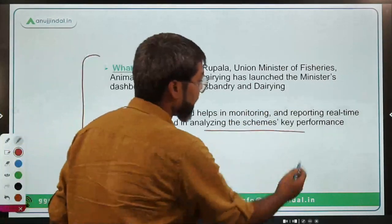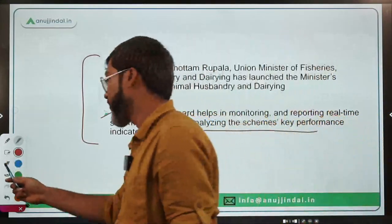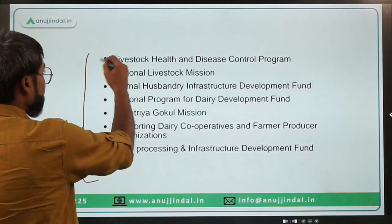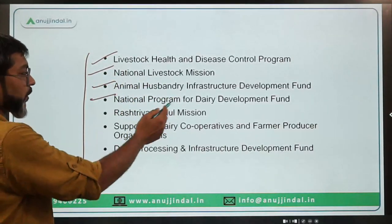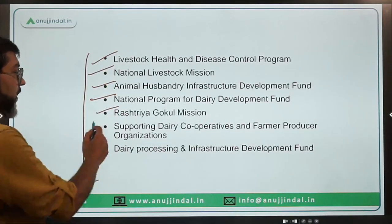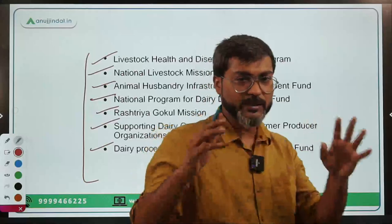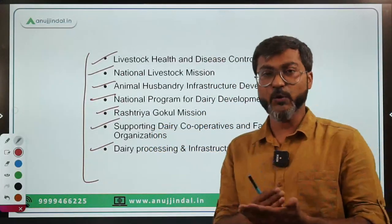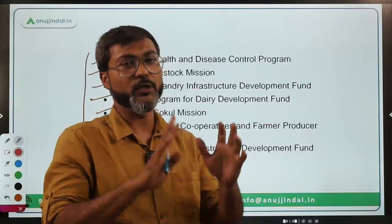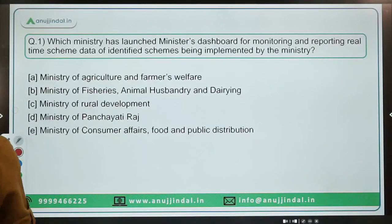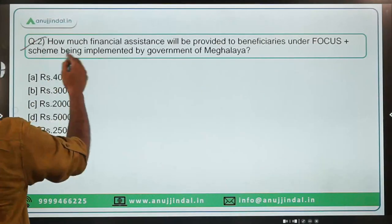The dashboard also helps in analyzing the schemes' key performance indicators. The schemes covered include: Livestock Health and Disease Control Program, National Livestock Mission, Animal Husbandry Infrastructure Development Fund, National Program for Dairy Development, Rashtriya Gokul Mission, Supporting Dairy Cooperatives and Farmer Producer Organizations, and Dairy Processing and Infrastructure Development Fund. The correct answer is Option B — Ministry of Fisheries, Animal Husbandry and Dairying.